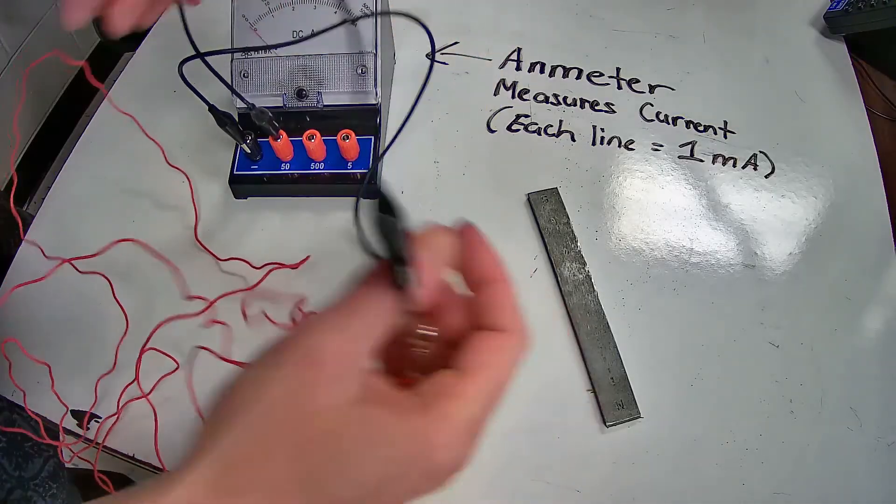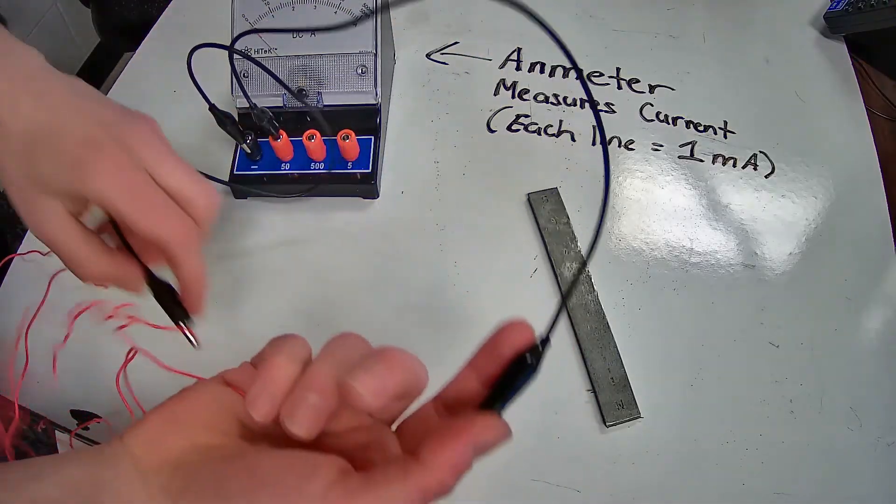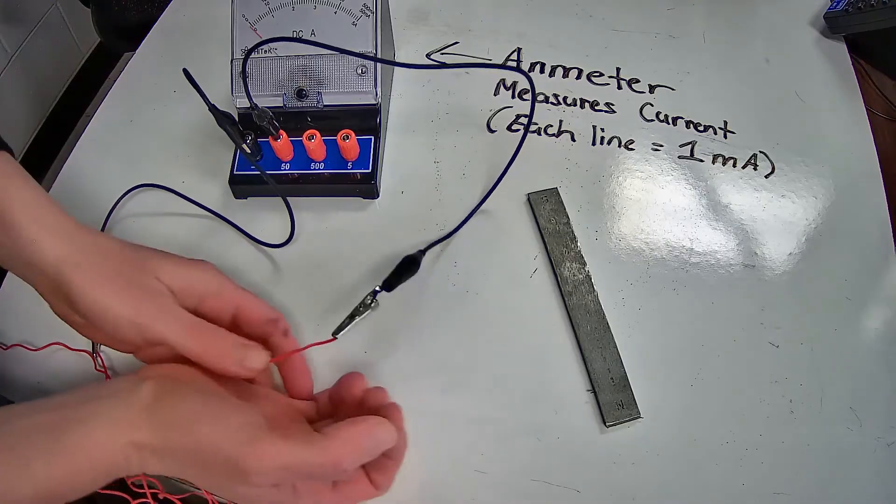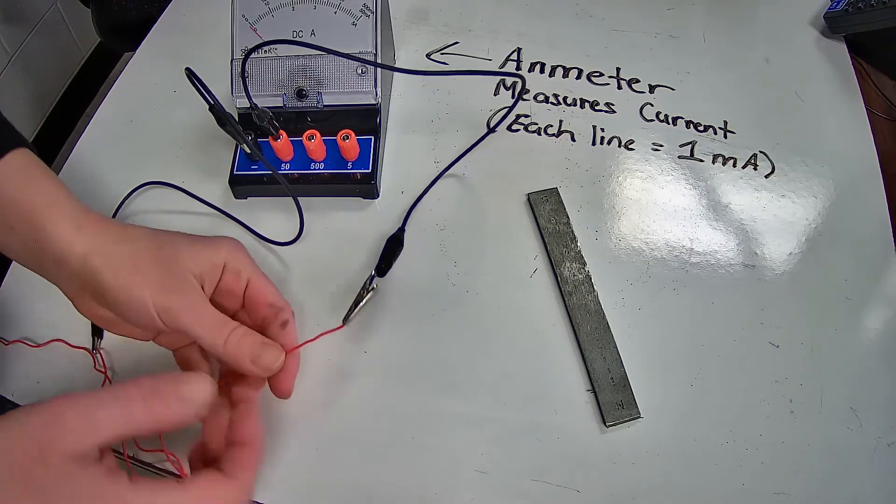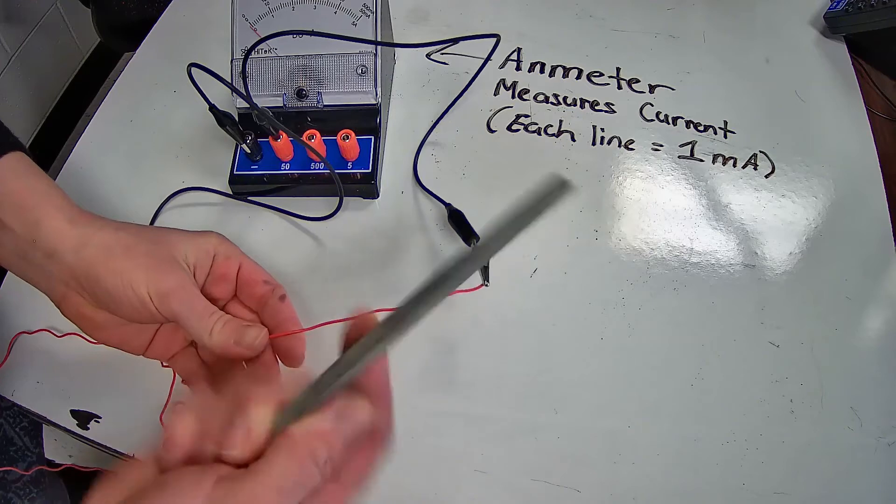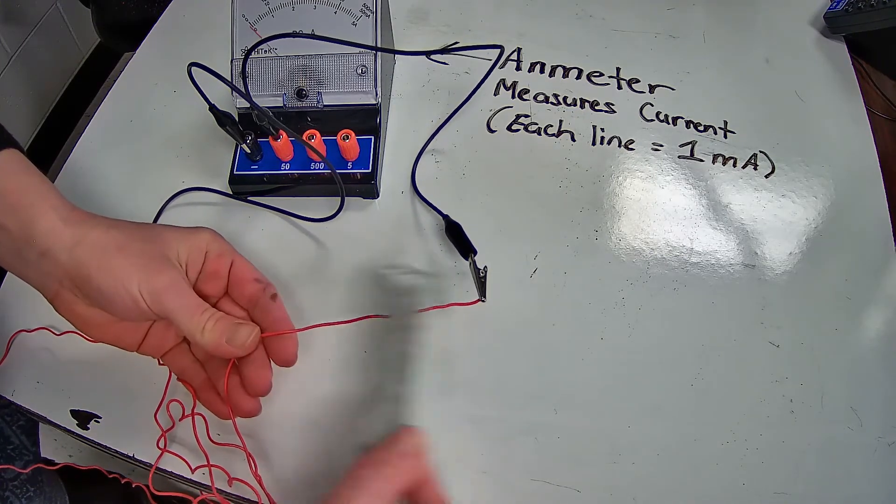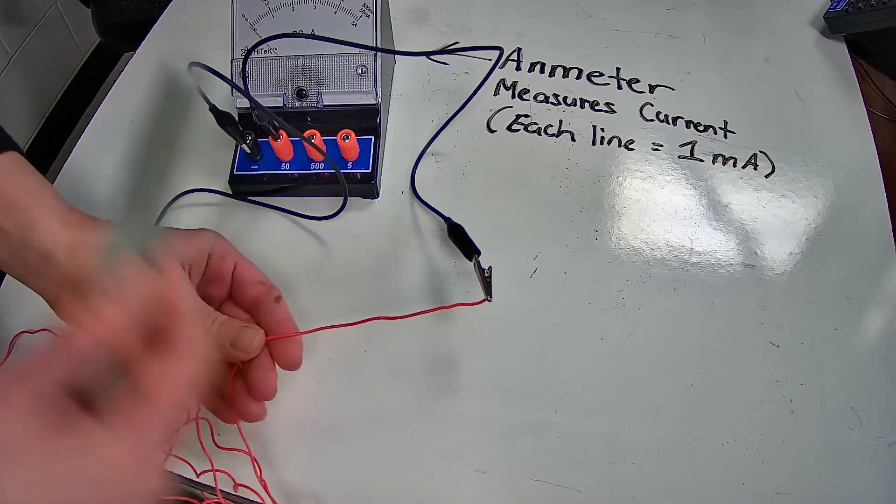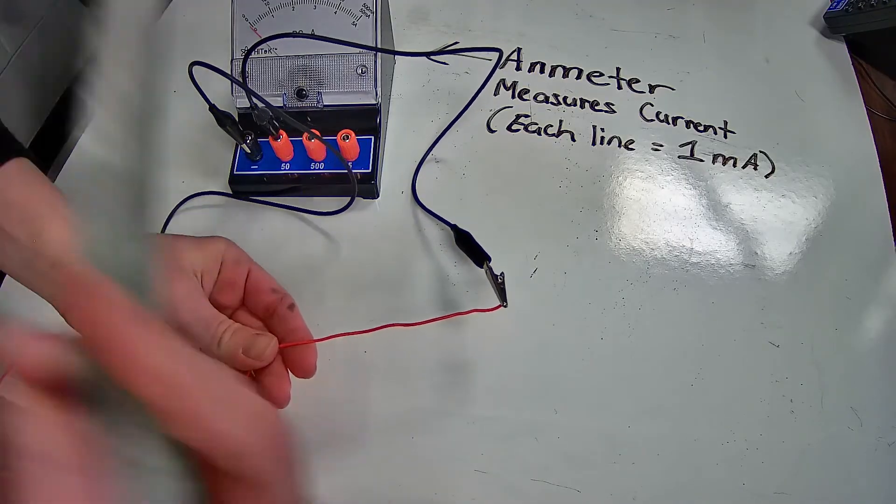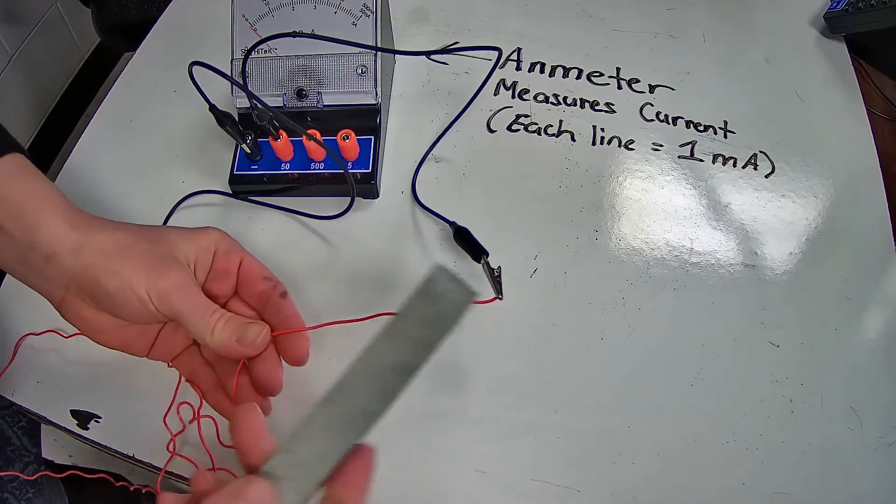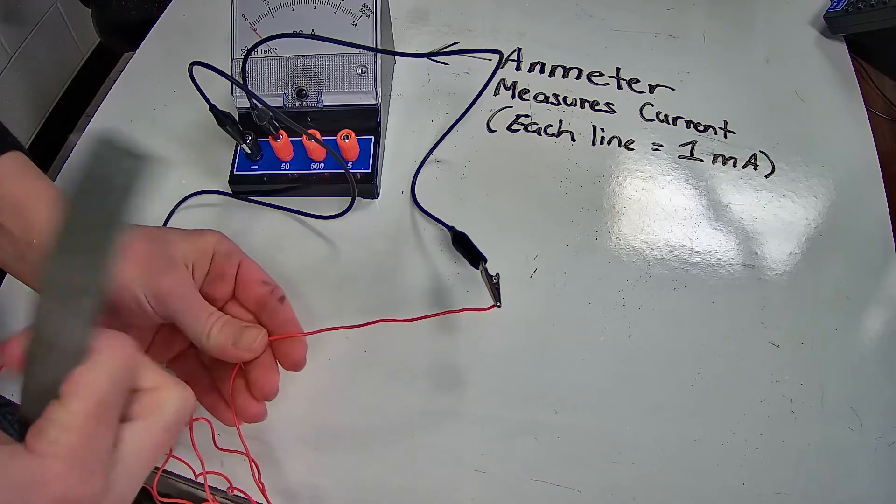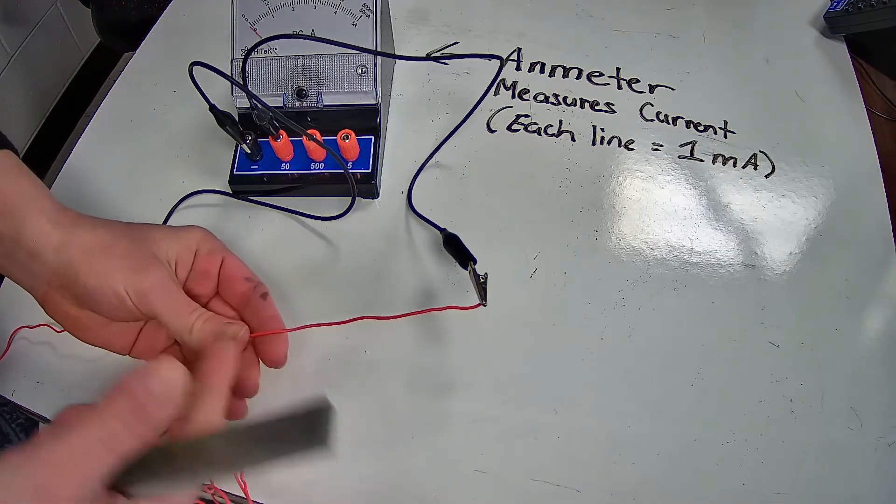Most students realize that electrical current is electrons moving. So they try to get the magnetic field to push the electrons. Often they start like this. But see, nothing's happening on the ammeter. That's because you're only getting a few electrons that are here in the wire to move.